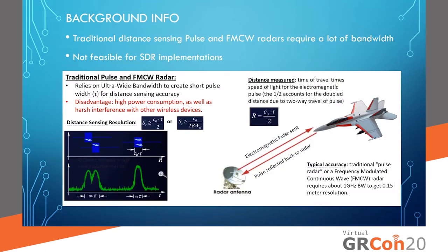A traditional distance sensing pulse or MFCW radar requires a lot of bandwidth, and this is not feasible for an SDR implementation. In fact, in order to get 15-centimeter resolution, it requires about 1 gigahertz of bandwidth. This is because they rely on an ultra-wide bandwidth to create a very short pulse width to increase the distance sensing accuracy. However, this increases power consumption, as well as interferes with other wireless devices.